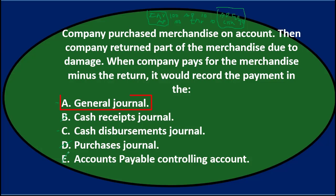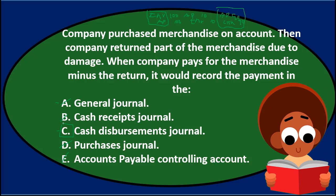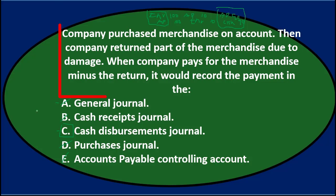We're left with the general journal and the cash disbursements journal. The general journal is the default used when no other journal fits. Since this transaction fits in the cash disbursements journal, we use that and eliminate the general journal. The answer is C — cash disbursements journal.